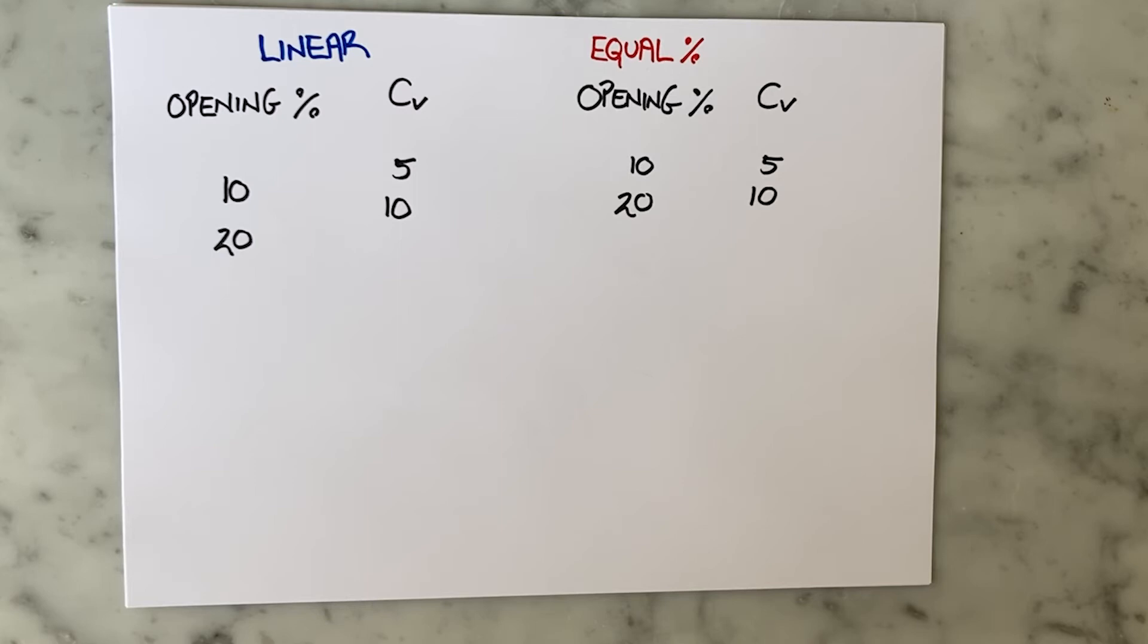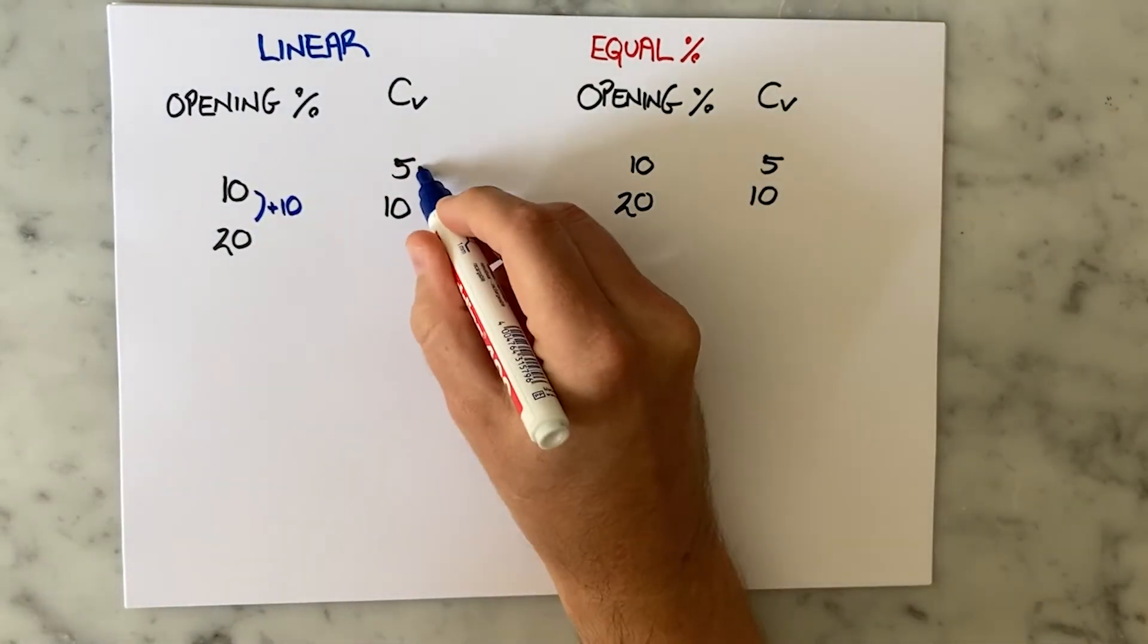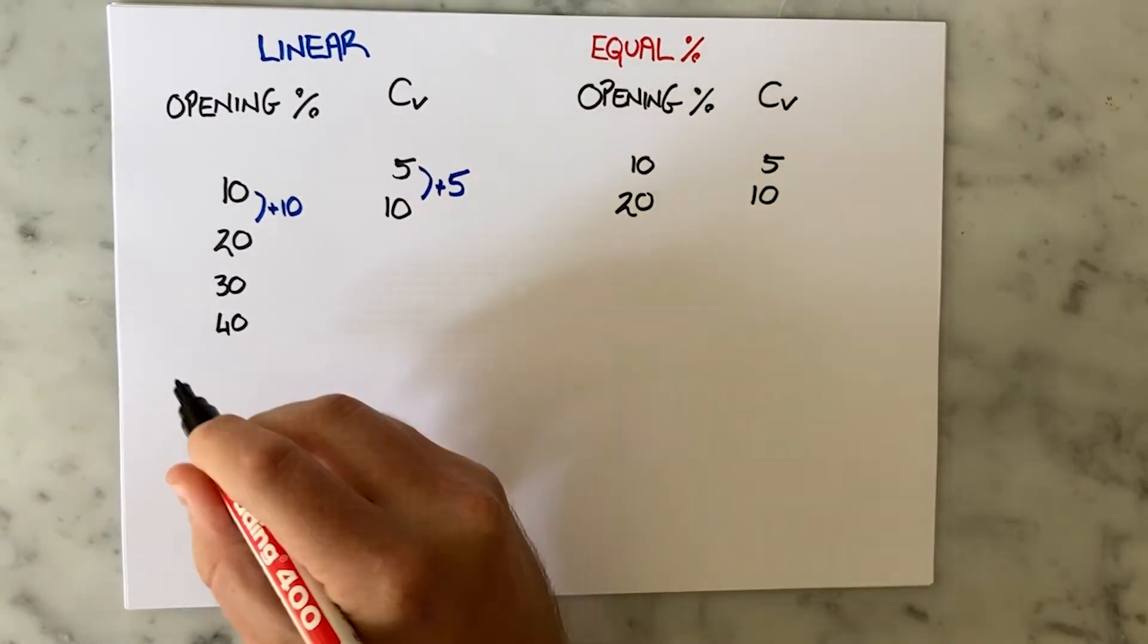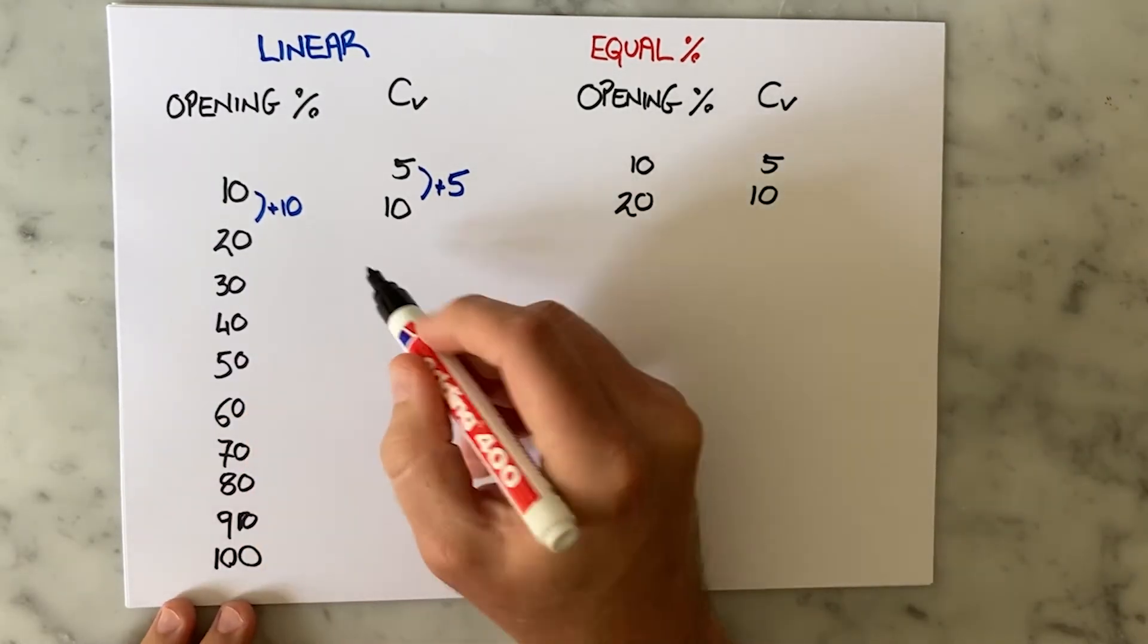The linear valve will carry on adding 5 to its CV for every additional 10% it opens. So at 30% it goes up another 5 to a CV of 15.